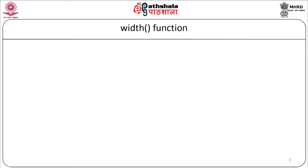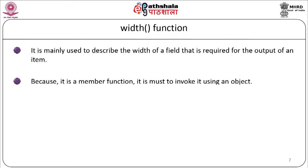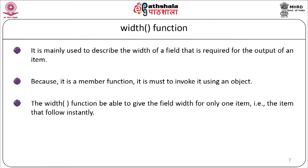Let us start with the width function. It is mainly used to describe the width of a field required for the output of an item. Because it is a member function, it must be invoked using an object. The width function gives the field width for only one item — the item that follows immediately. The syntax is: cout.width(w), where w is the field width, that is, the number of columns.